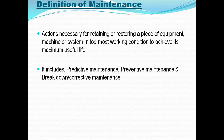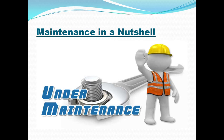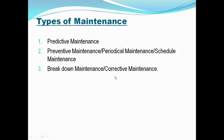Now we will study these in detail. These are the types of maintenance. The three types are: predictive maintenance, preventive maintenance (also referred to as periodical maintenance or scheduled maintenance), and breakdown maintenance (also called corrective maintenance).